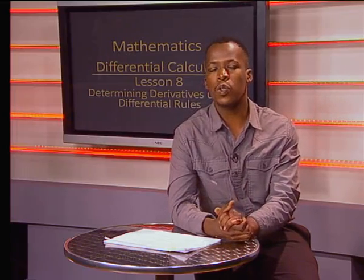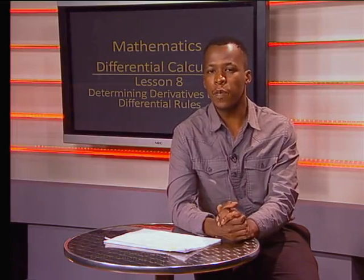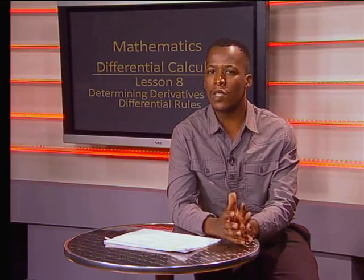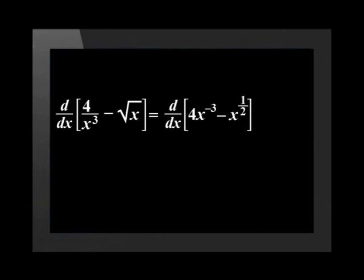The next confusing part is the square root. We need to rewrite this as an exponent. We know that the mth root of x to the power of n is equal to x to the power of n divided by m. Therefore, the square root of x is equal to x to the power of 1 divided by 2. Now let's rewrite our problem so that it's easier to work with. The derivative of 4 divided by x cubed minus the square root of x is equal to the derivative of 4x to the power of minus 3. Why don't you try the rest of this on your own? The answer will be minus 12x to the power of minus 4 minus a half x to the power of minus a half.